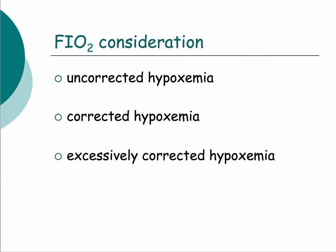When talking about hypoxemia ranges, we need to consider what FiO2 the patient is on. Uncorrected hypoxemia means they're receiving supplemental oxygen but are still hypoxemic — we failed to correct it. Corrected hypoxemia means they're on supplemental oxygen and without it they would be hypoxemic. Excessively corrected hypoxemia means we've overly corrected a hypoxemic patient to above normal range.